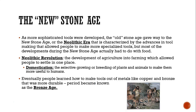As more sophisticated tools were developed, the Stone Age gave way to the New Stone Age, otherwise known as the Neolithic Era. That is characterized by advances in tool making that allowed people to make more specialized tools — think more like knives rather than just crude arrowheads. Most of the developments during the New Stone Age actually have to do with food. In the Neolithic Era, they had the Neolithic Revolution, when they developed agriculture into farming. So instead of just gathering wild nuts and berries, people began to cultivate those crops.